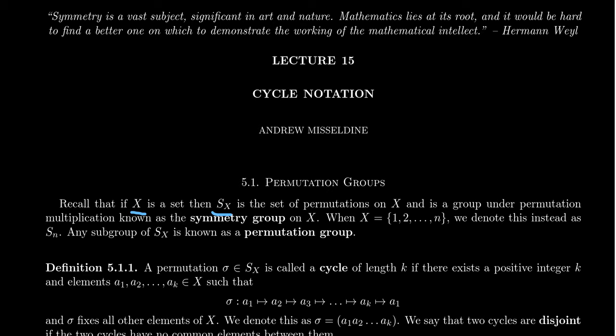These are going to be maps from X back into itself that are bijections, both one-to-one and onto. Now we've seen previously that the composition of permutations or what we call permutation multiplication is itself a permutation.